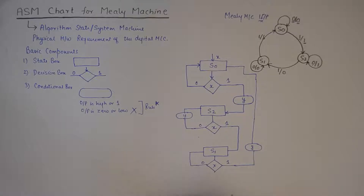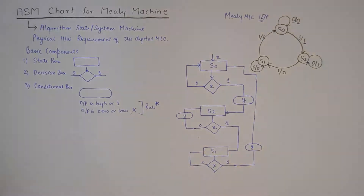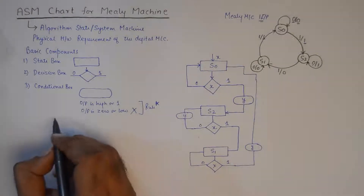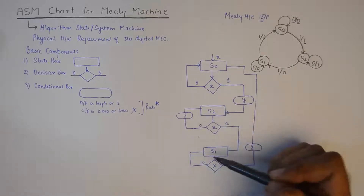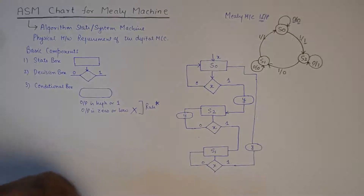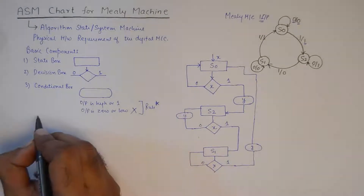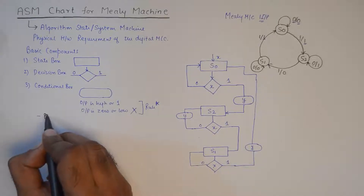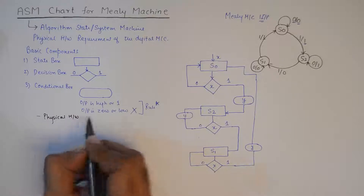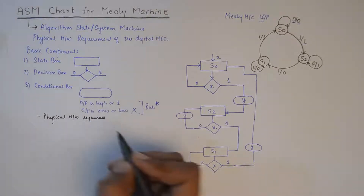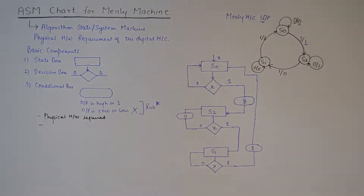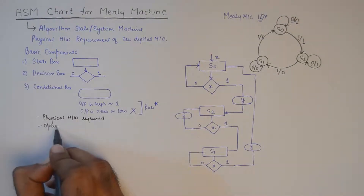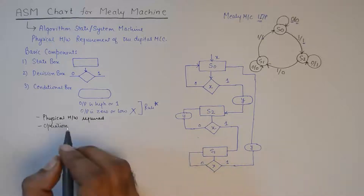Having drawn one such ASM chart, we can enumerate its benefits. The first benefit is that it represents physical hardware — for example, it tells us how many state boxes, conditional boxes, and decision boxes are needed, so it tells us about the amount of physical hardware required. Secondly, the operation of any digital system is easily understood just by looking at the ASM chart.